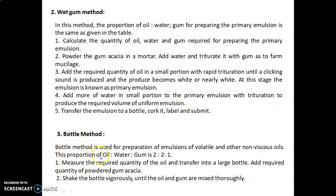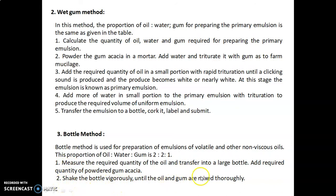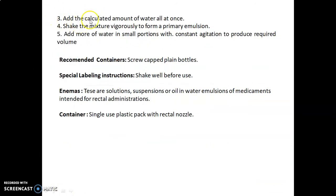The bottle method is used for preparation of emulsions of volatile and other non-viscous oils. The proportion of oil to water to gum is 2:2:1. Measure the required quantity of oil and transfer it into a large bottle. Add the required quantity of powdered gum acacia and shake vigorously until the oil and gum are mixed thoroughly. Add the calculated amount of water all at once and shake vigorously to form a primary emulsion. Then add more water in small portions with constant agitation to produce the required volume. Recommended containers are screw-capped plain bottles. Special labeling instruction: shake well before use.